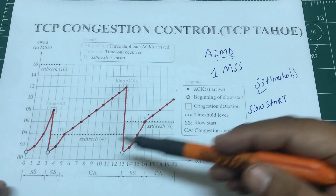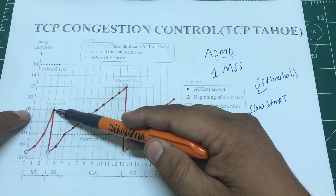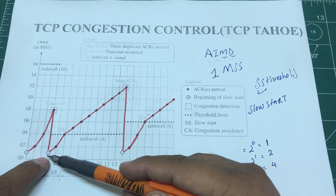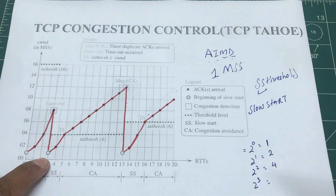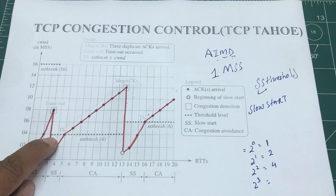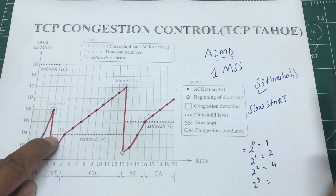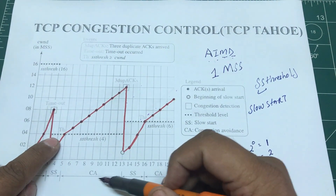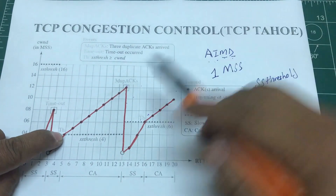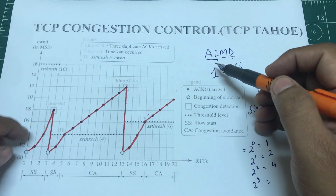After timeout, we start off from one MSS again. In slow start, as soon as timeout occurs, you make your threshold half of your congestion window value, bring it down to half, and restart from one MSS. You begin that exponential slow start phase again: one, two, four packets. As soon as you hit your threshold, you switch to congestion avoidance mode, where you increase additively.